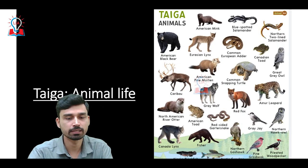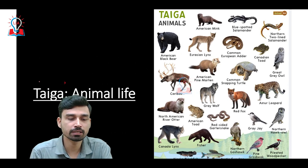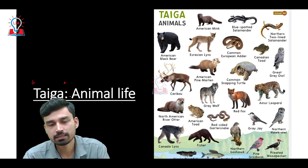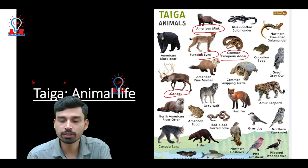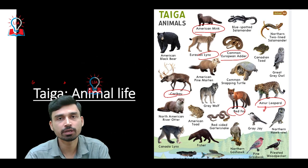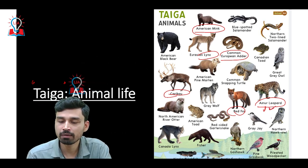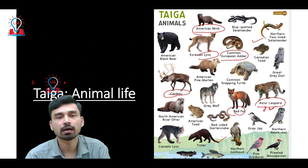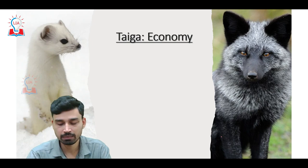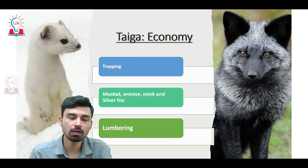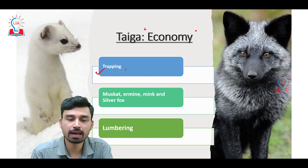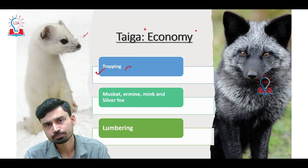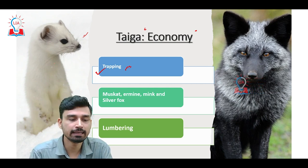The animal life of the Taiga is also distinct. Animals include the American mink, lynx, marten, caribou, deer, red fox, and the Amur leopard found in the Eurasian and Russian region. Reptiles and birds are also found here. Importantly, animals play a very significant role in the economy of people inhabiting the Taiga. The most important economic activity is trapping — capturing animals and removing their fur, which is then sold at very high prices to be made into winter clothes.